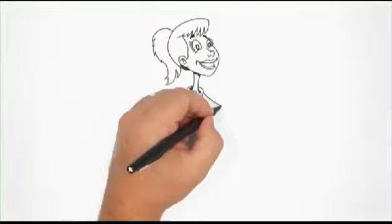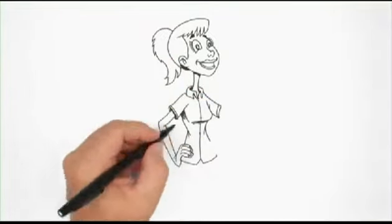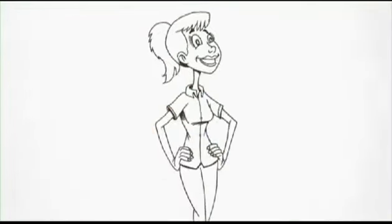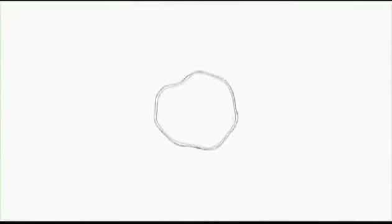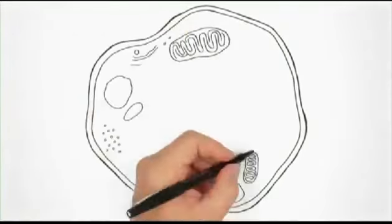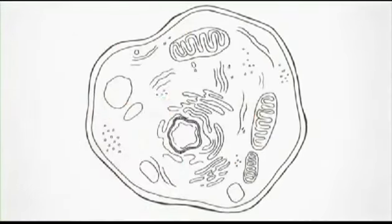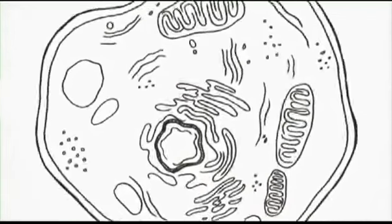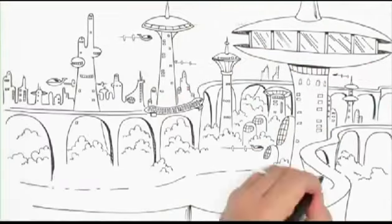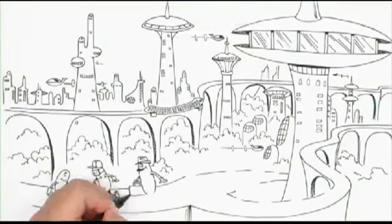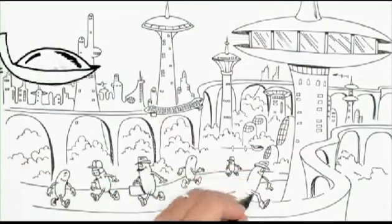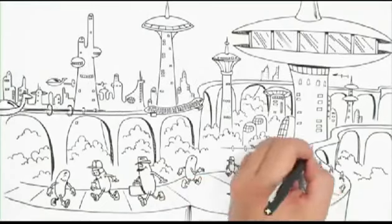The human body is an extraordinary creation made up of between 50 and 100 trillion cells, each one performing just the right function in just the right place at just the right time. Your cells themselves are amazing. Each one is a bustling metropolis of activity, a city that never sleeps. Every second of every day, your cells work tirelessly to keep your body healthy and strong.